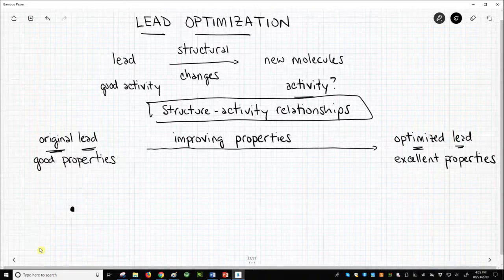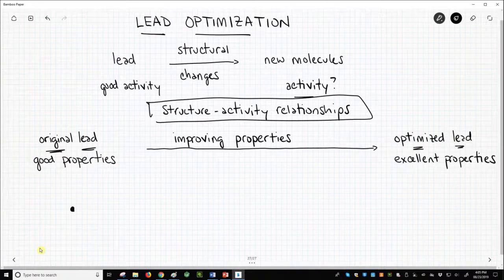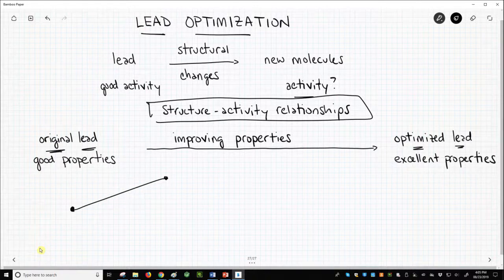We can visualize lead optimization as a progression of a molecule. The original lead is here, far to the left of the screen, representing non-optimal properties. Many structural changes are made to the lead to give many new molecules.